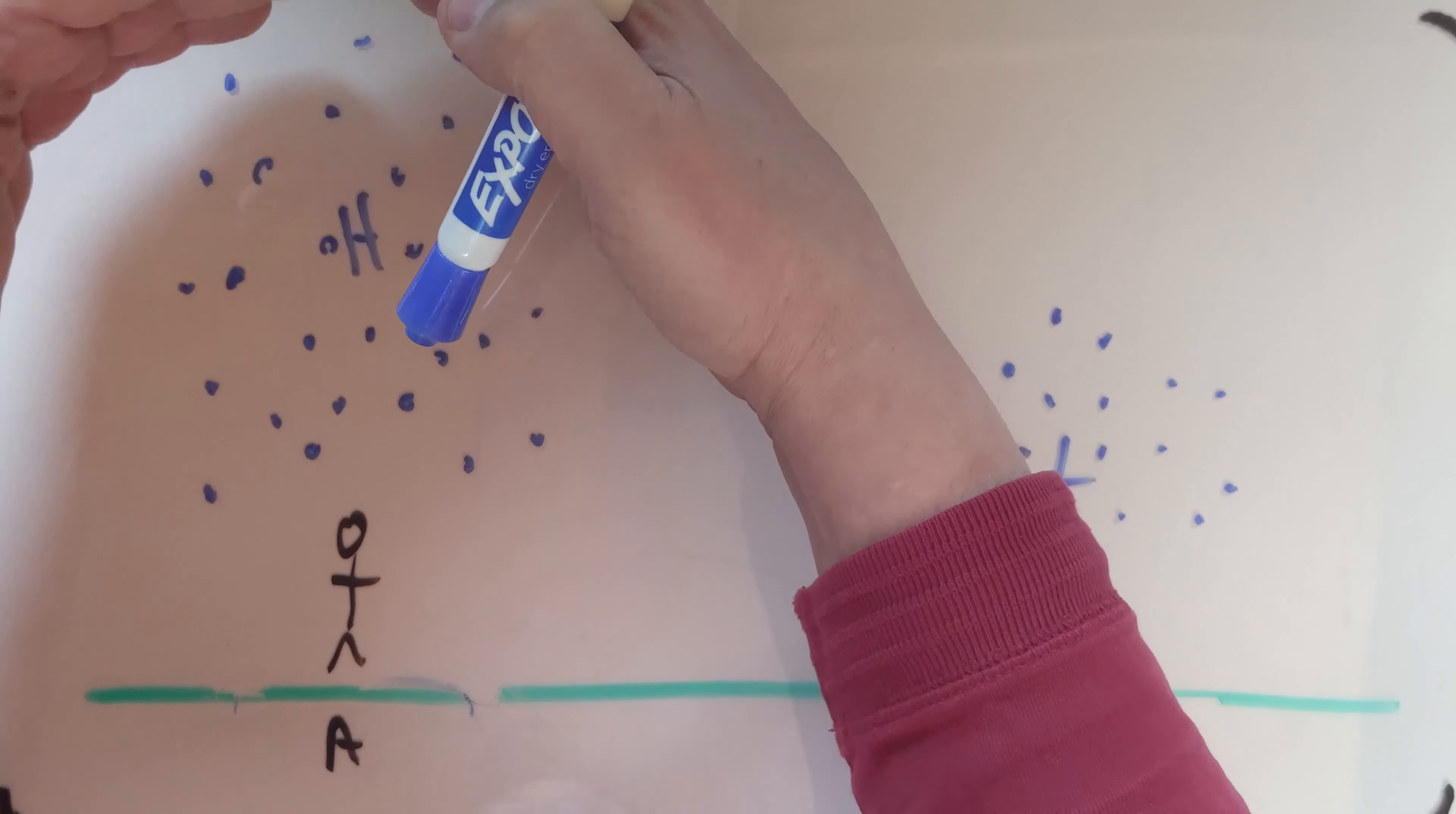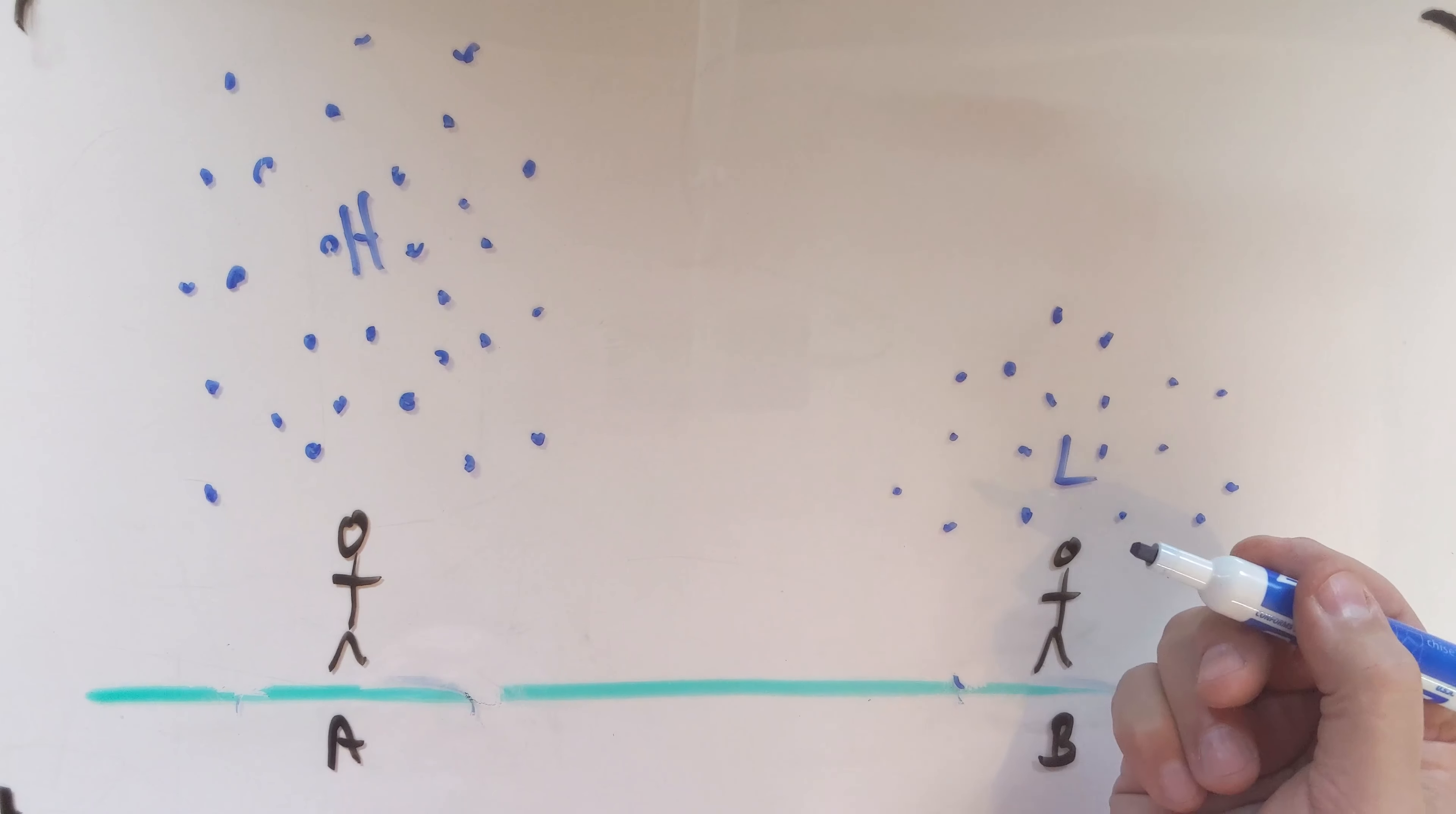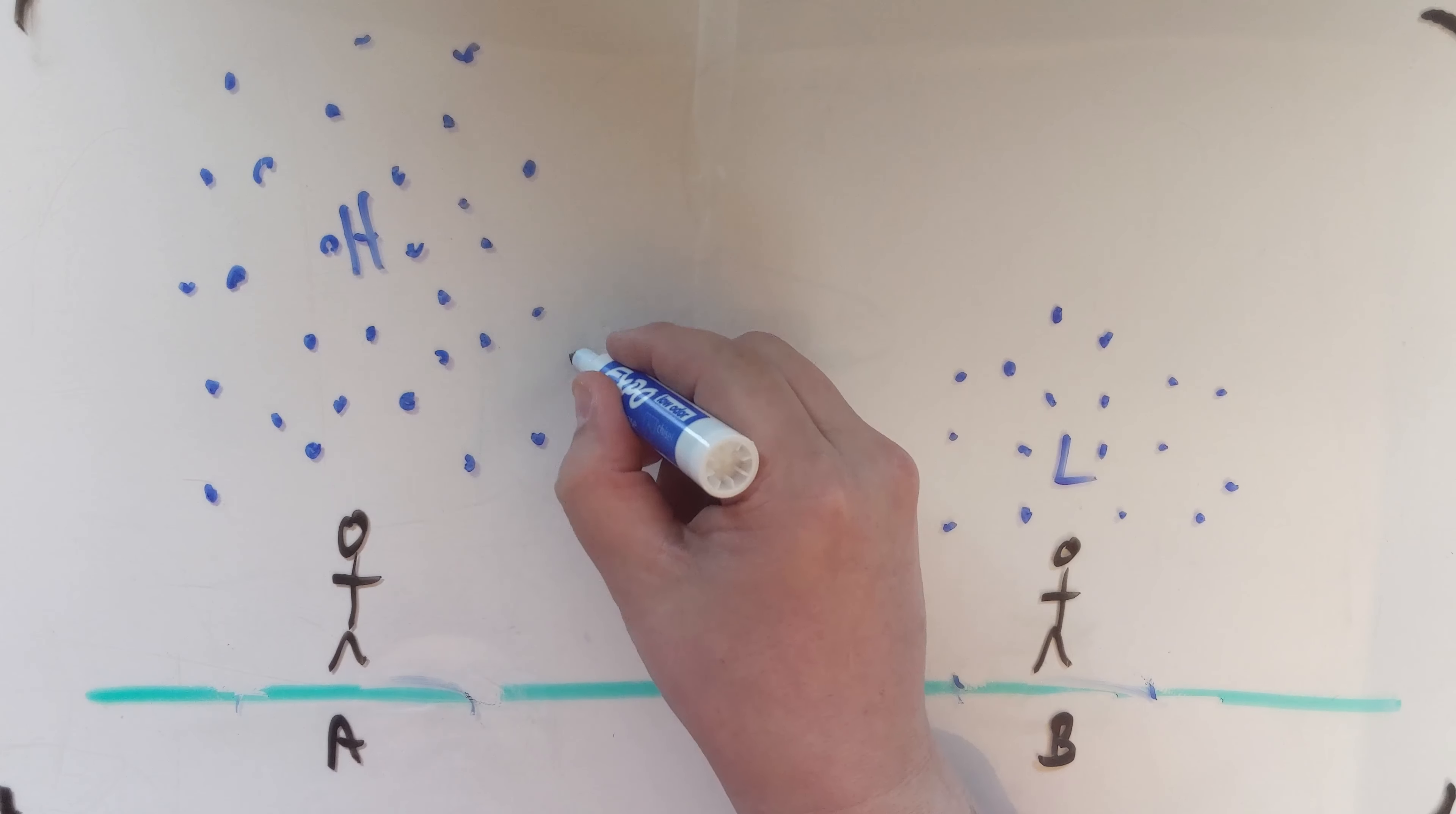But because this one's a bigger pile, this one's going to cause this one to pull down more and move over to fill this side in until they're equal. So the idea is all these air particles are going to move in this direction in order to get to the point where the two air piles even out.